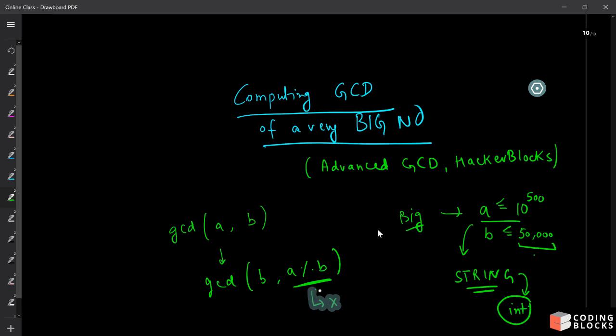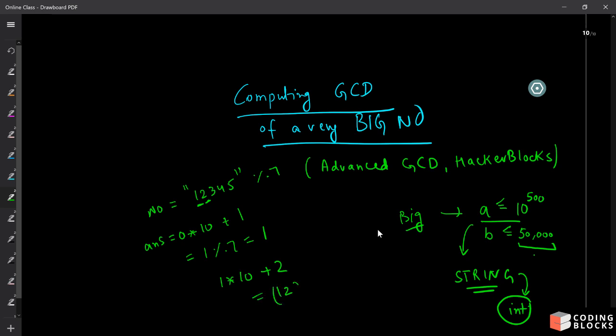Now the question is how to take mod. It's pretty easy. Suppose you have a number like this, a string stored as 12345. My answer starts with 0 and I extract the first character, so 0×10 plus 1 becomes 1. 1 mod 7 is also 1. Next time you have 1×10 plus the next digit 2, this becomes 12, so 12 mod 7 is 5.